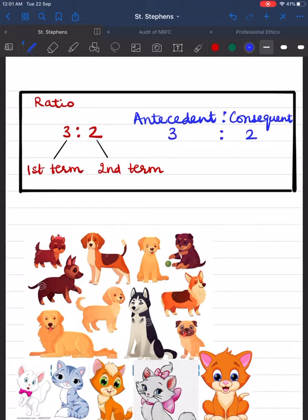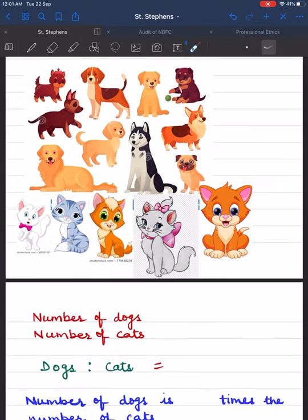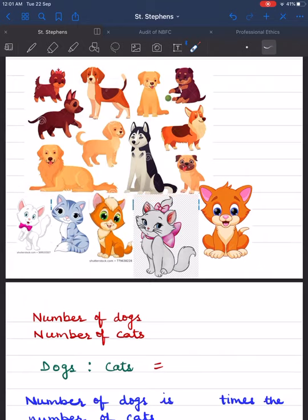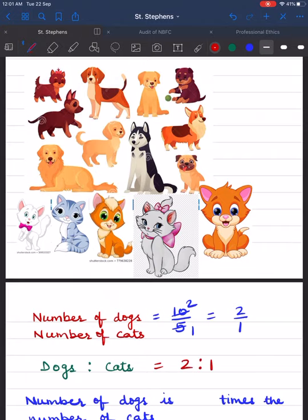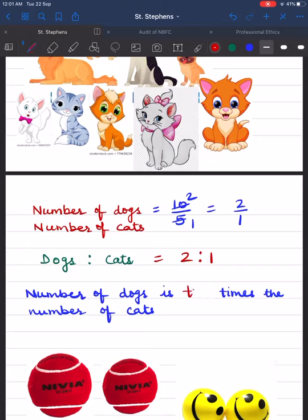The second term is called the consequent, meaning 'that which follows.' So here 3 is the antecedent and 2 is the consequent. Let us consider more examples. There are 10 dogs and 5 cats in a pet shop. Number of dogs upon number of cats is equal to 10 upon 5. Here 5 is the common factor — 5 twos are 10, 5 ones are 5 — so we get 2 upon 1. Therefore, dogs ratio cats is equal to 2 is to 1, so the number of dogs is 2 times the number of cats.